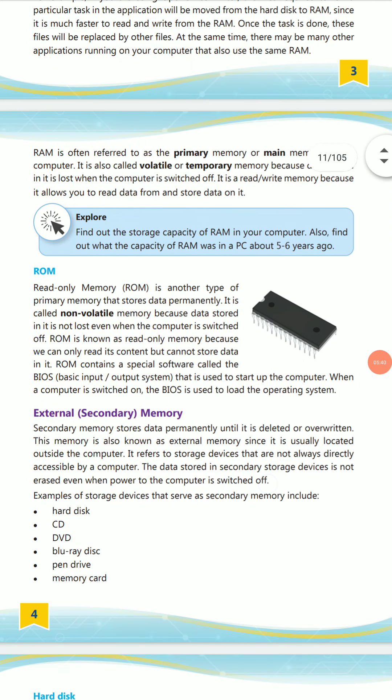ROM stands for Read Only Memory. It is another type of primary memory that stores data permanently. It is also called non-volatile memory because data stored in it is not lost when the computer is switched off. ROM is read-only because we can only read its contents but cannot write new data to it.